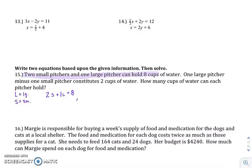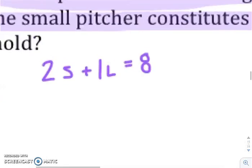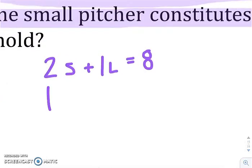Then it says, okay, well, one large pitcher minus one small pitcher constitutes two cups. That is your second equation, one large minus one small is two whole cups of water.